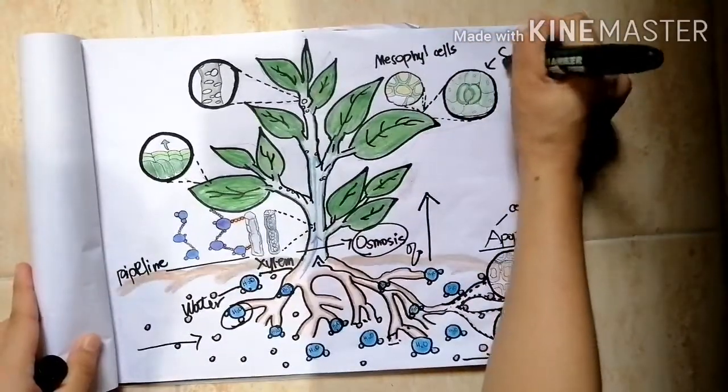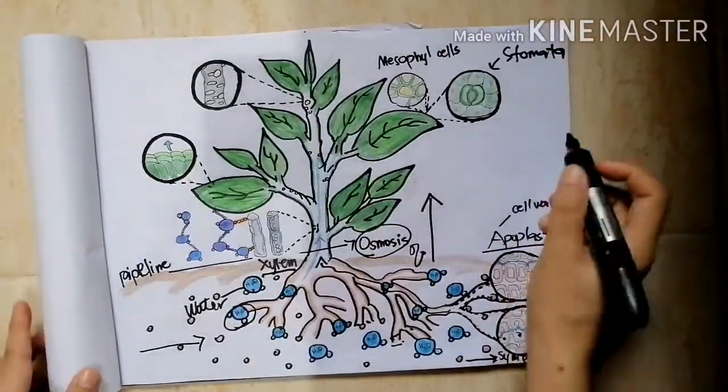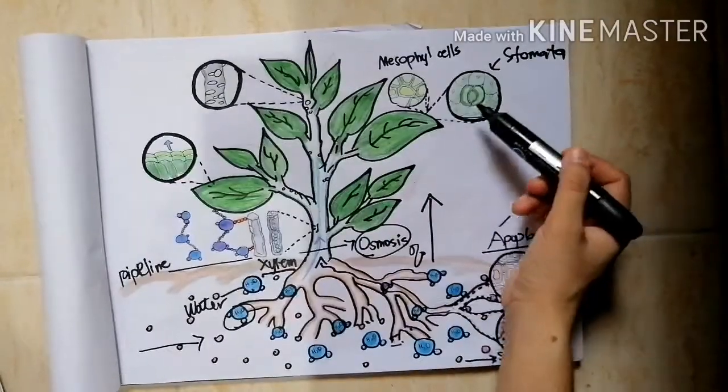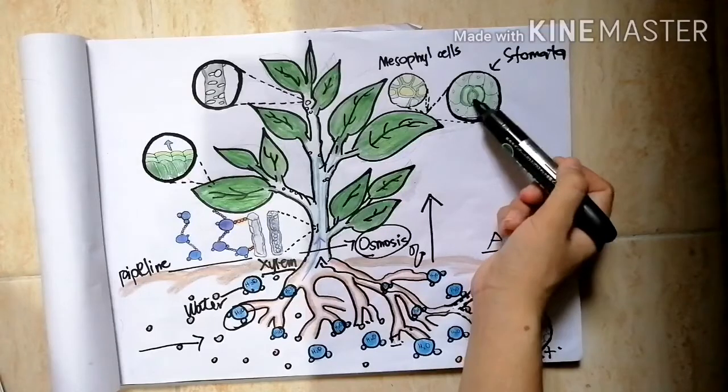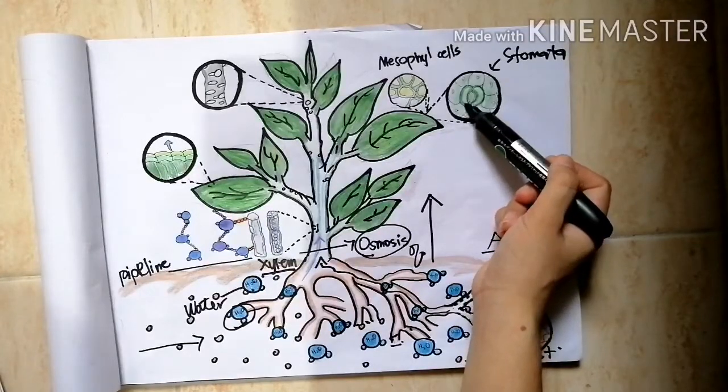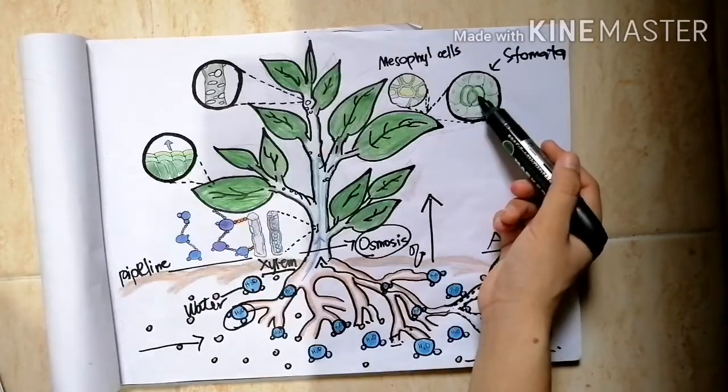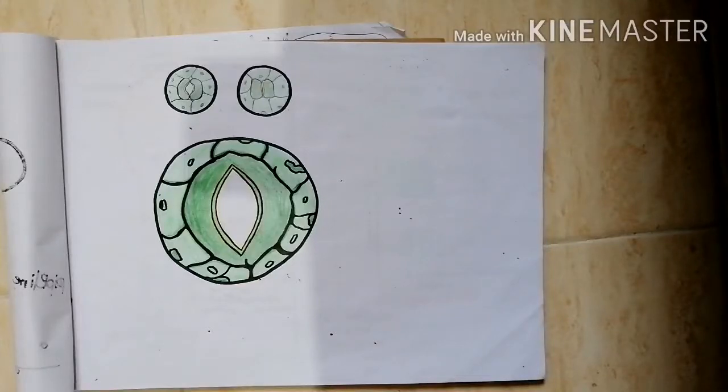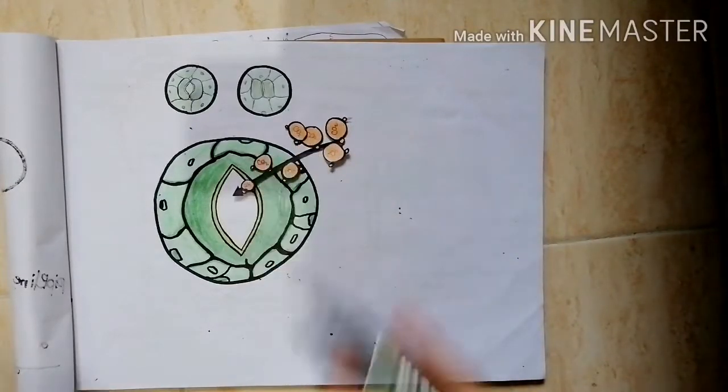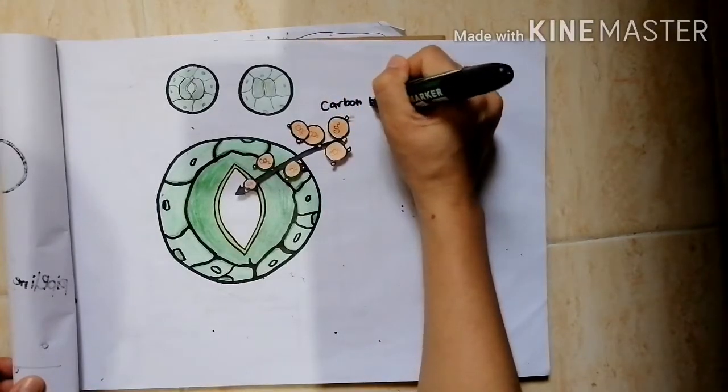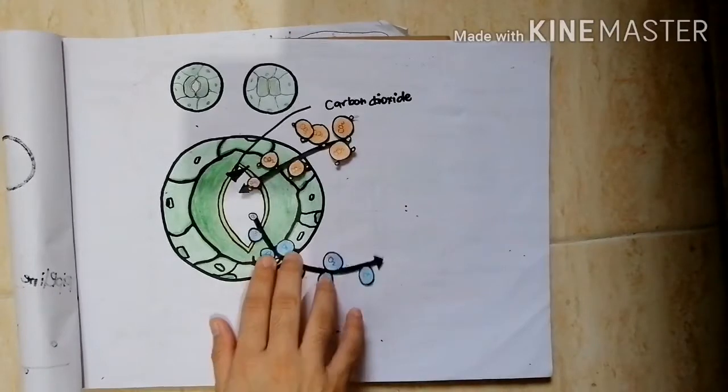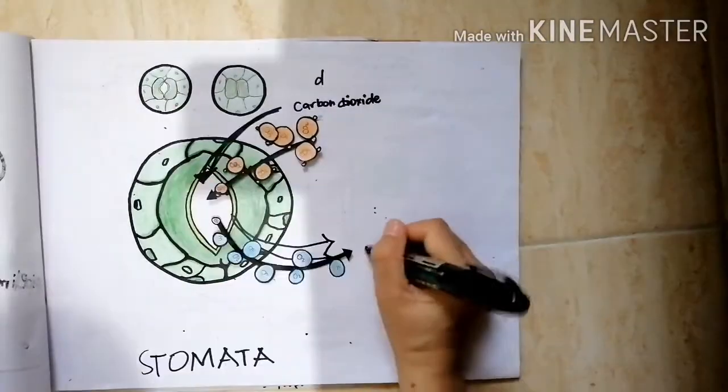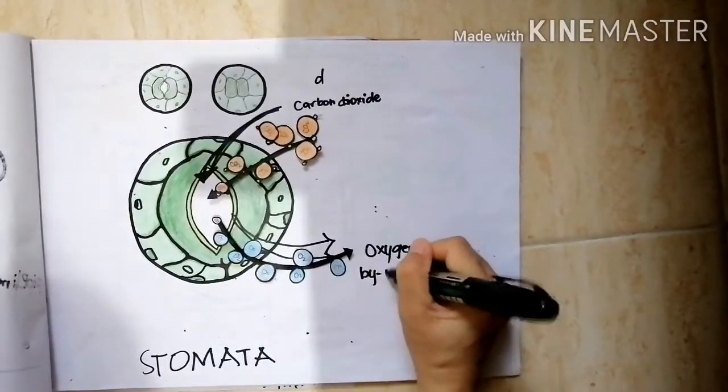Water then enters through mesophyll cells through stomata. Stomata are openings on the leaf surface through which transpiration takes place. It consists of a pair of bean-shaped cells called guard cells which regulate the opening and closing of stomata. During photosynthesis, air containing carbon dioxide diffuses into the stomata. Oxygen produced as a by-product of photosynthesis diffuses out through same opening.